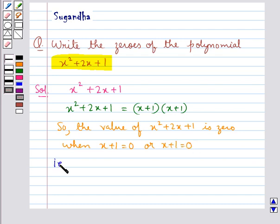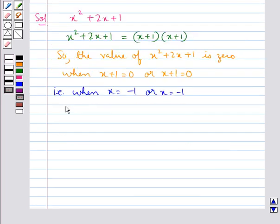That is we have when x equal to minus 1 or x equal to minus 1. Therefore, we say that the zeros of the polynomial x squared plus 2x plus 1 are minus 1 and minus 1.